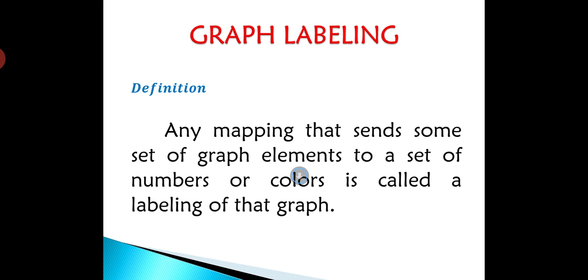The definition of graph labeling is any mapping that sends some set of graph elements to a set of numbers or colors is called a labeling of that graph. A graph labeling is a mapping, so it contains a function. A function has domain and co-domain. Here the domain has set of graph elements and the co-domain has numbers or colors.